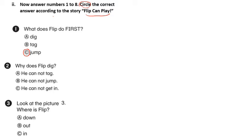Question number 2. Why does Flip dig? Is it A. He cannot tag. Or B. He cannot jump. Or C. He cannot get in. Now if you remember that Flip can jump, so why does he dig? Because he cannot get in. This is C.